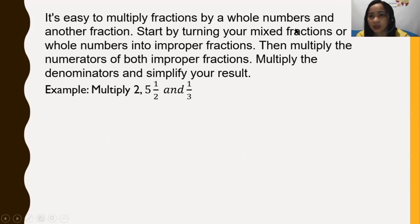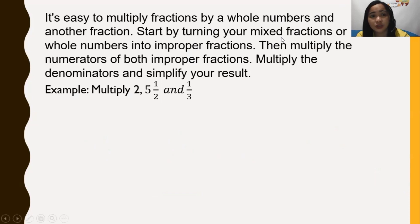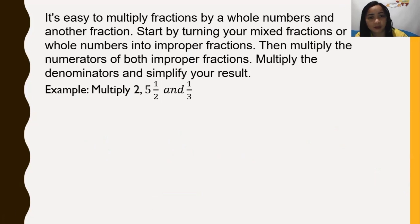It is easy to multiply fractions by whole numbers and a fraction by a whole number and another fraction. Start by turning your mixed fraction or whole number into an improper fraction, then multiply the numerators of both fractions, multiply the denominators, and simplify your answer. For example, we have two times five and one-half times one-third.